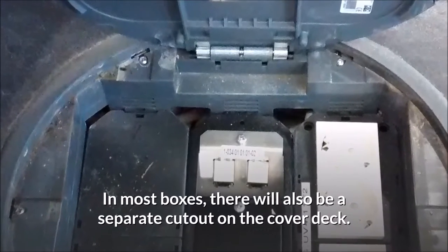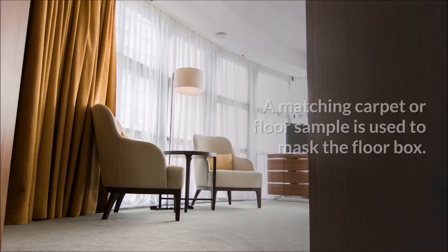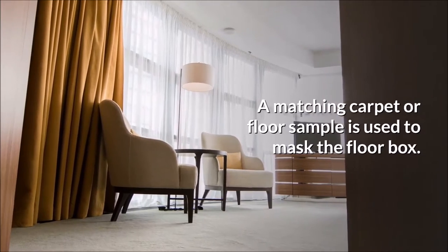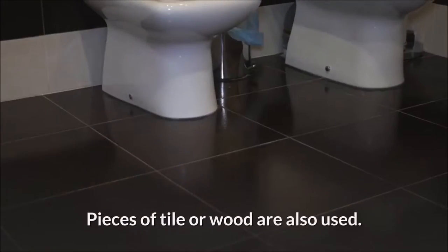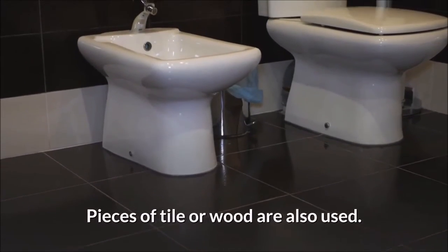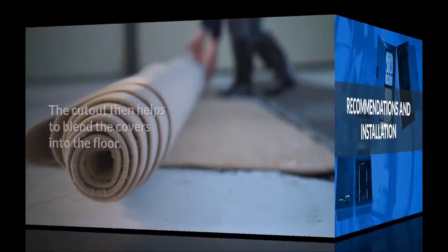In most boxes, there will also be a separate cutout on the cover deck. A matching carpet or floor sample is used to mask the floor box. Pieces of tile or wood are also used. The cutout then helps to blend the covers into the floor.